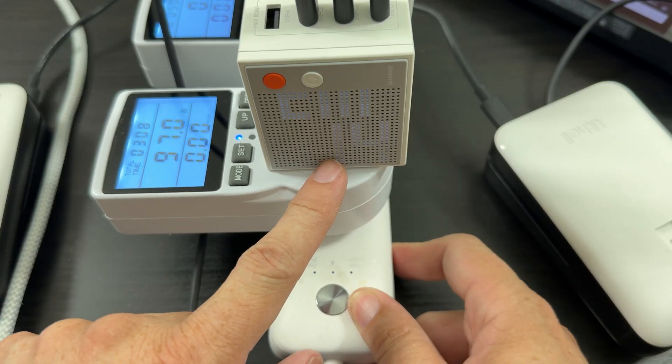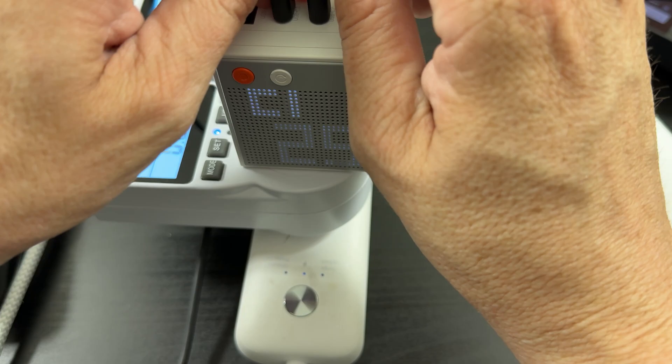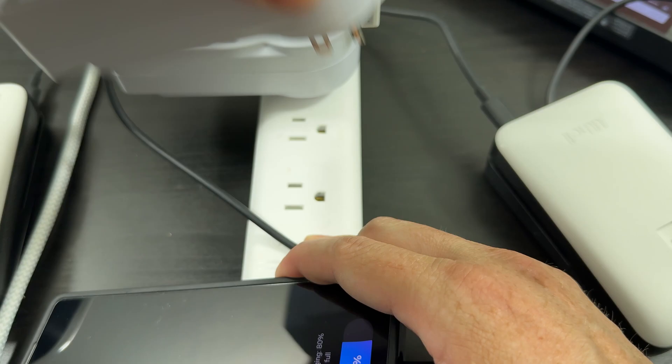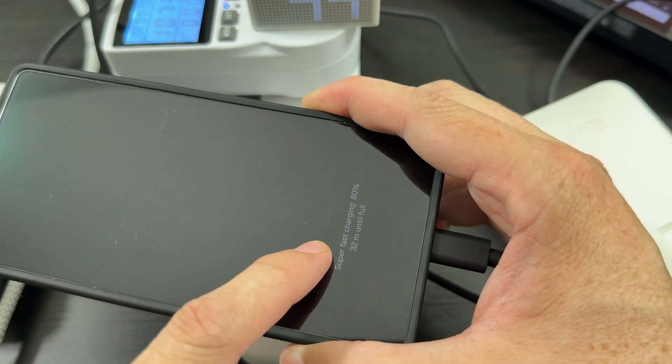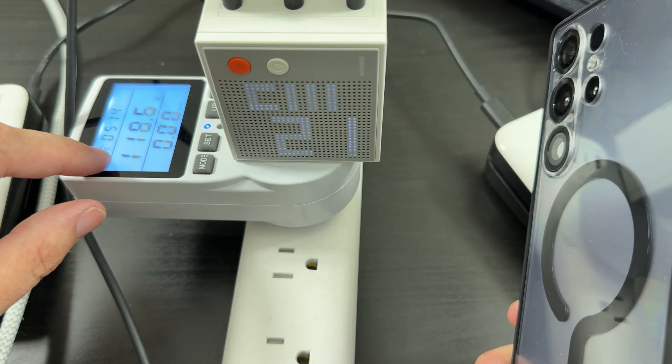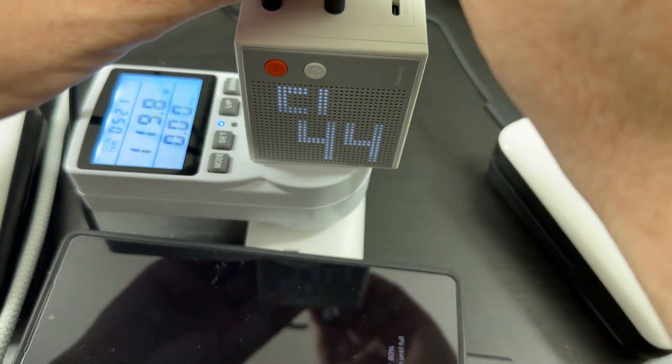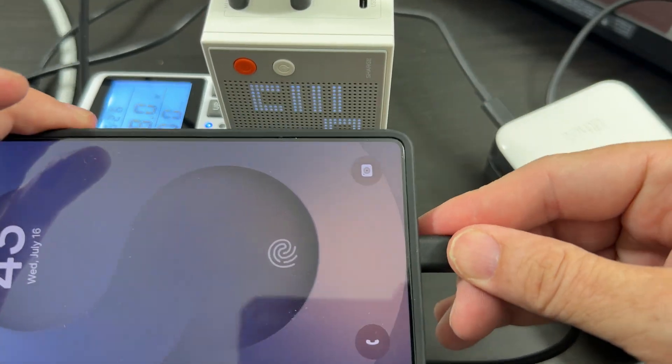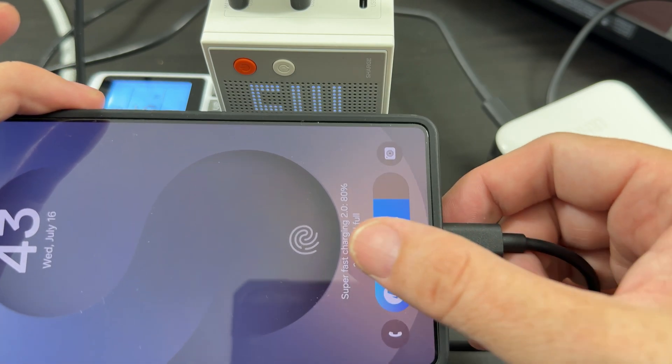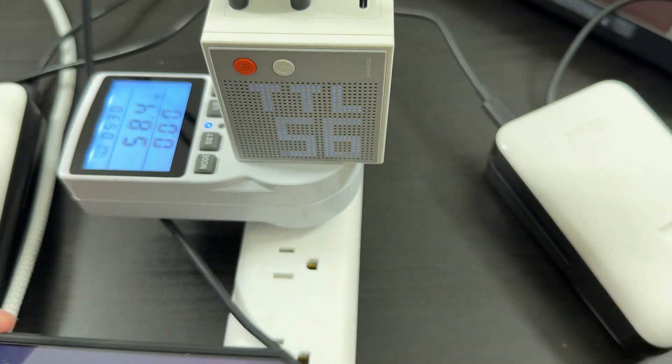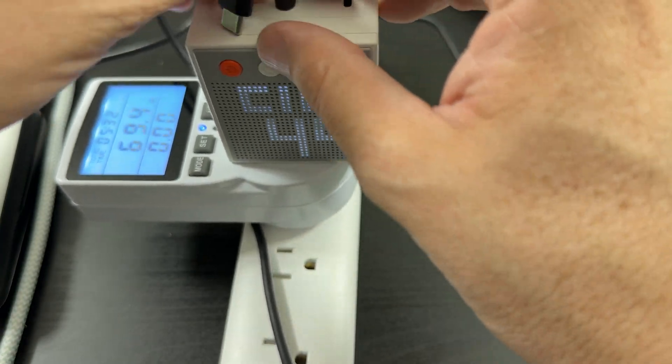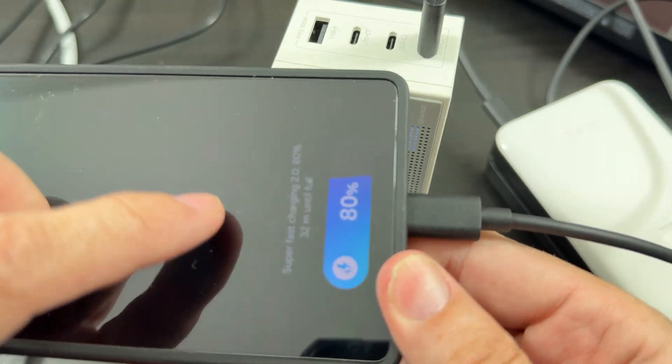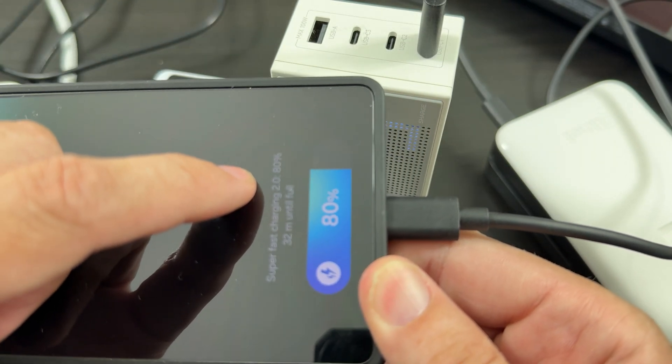And our phone's charging at 14 watts currently. But now if we just change everything over to the other one and we connect up the phone, the phone says super fast charging. And yeah, we're drawing 120 watts from the wall. Now, if we only have two things connected, will we get super fast charging 2.0? Yes. We get super fast charging 2.0. Now, what if we use just this guy? Plug in one thing. Super fast charging 2.0. Sweet.